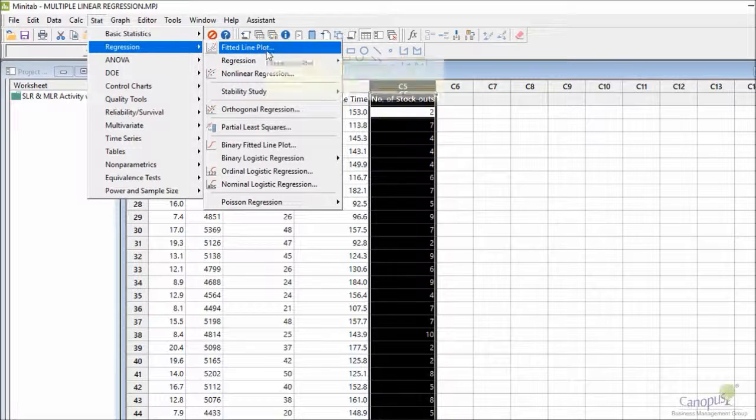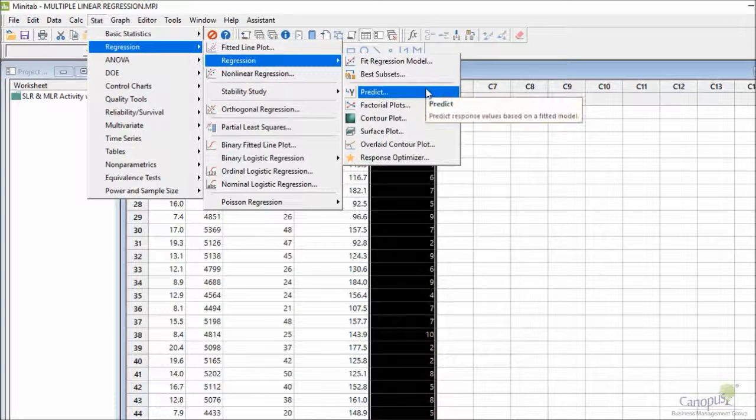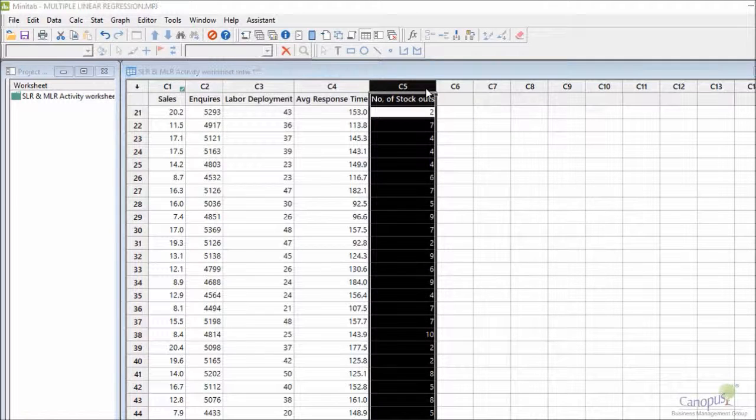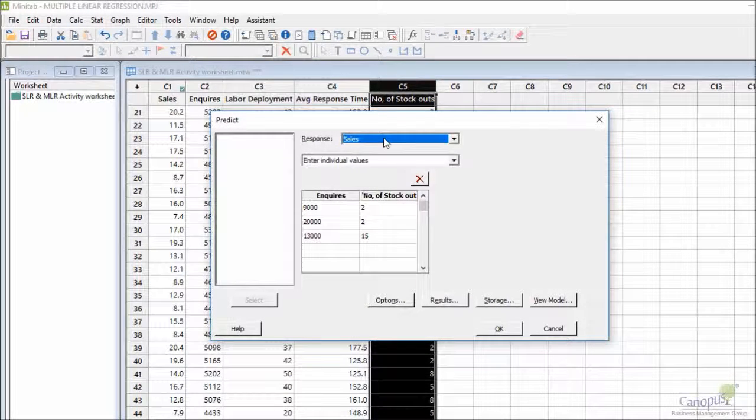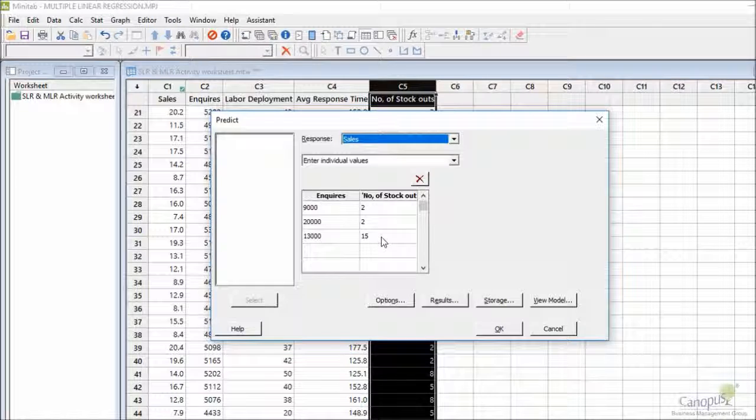So I go to stat, regression, I go to regression again and within that the third tab is predict. So I click on that and then I have the option to key in my response and then there are two options. One is I could enter individual values for enquiries and number of stockouts.